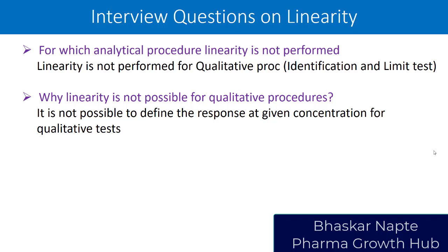A qualitative test only talks about comparison — whether the amount of impurity A present in a sample is less than the limit level of, say, 10 ppm. It cannot quantify whether the impurity in the test solution is 5 ppm or 9 ppm. Quantification is not possible because there is no measurable response from running the TLC plate. Without a measurable response, having concentration alone is not sufficient — you also need a measurable response to draw a linearity line, with concentration on the x-axis and response on the y-axis.